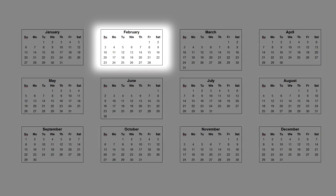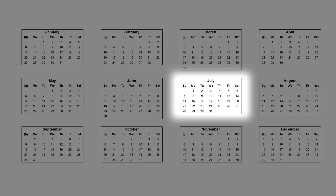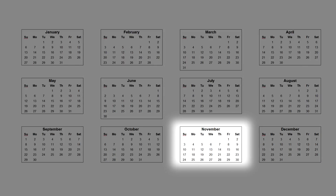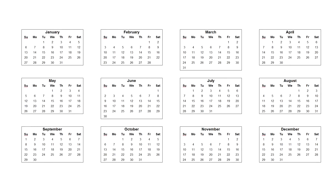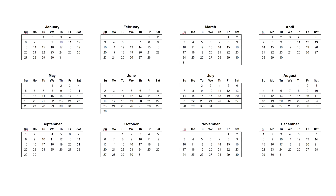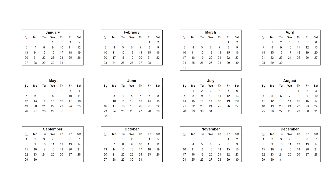One, two, three, four, five, six, seven, eight, nine, ten, eleven, twelve. Twelve months in a year. Seven days in a week. 52 weeks in a year. Twelve months in a year.